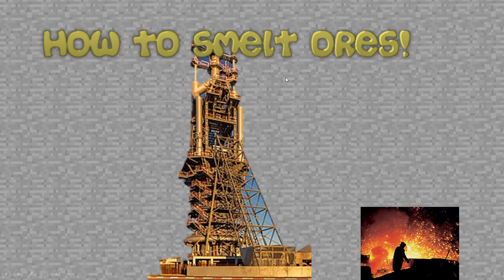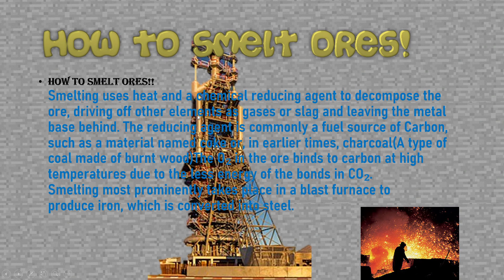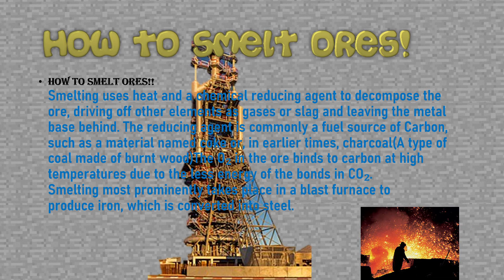How to smelt ores. Some smelting uses heat and a chemical reducing agent to decompose the ore, driving off the other elements such as gases, slag, or the unwanted stones, and leaving the metal base or the wanted materials behind. The reducing agent is commonly a fuel source of the carbon element, such as a material named coke, or in earlier times charcoal — a type of coal made of burnt wood and dead plants put in a furnace. The O2 in the ore binds to carbon at high temperatures due to the lower energy of the bonds of CO2.